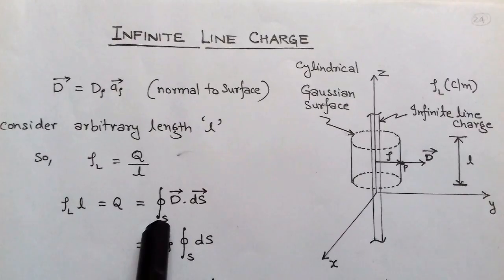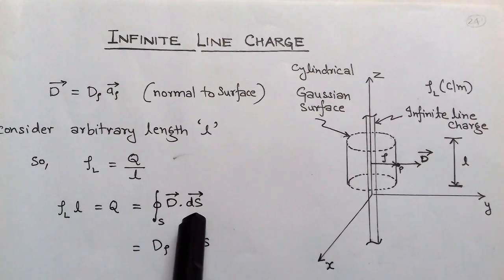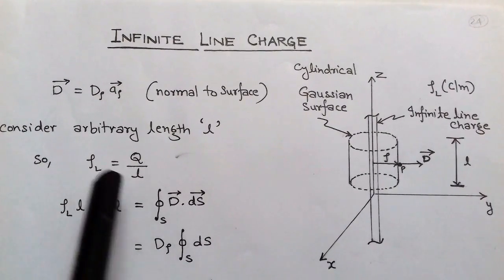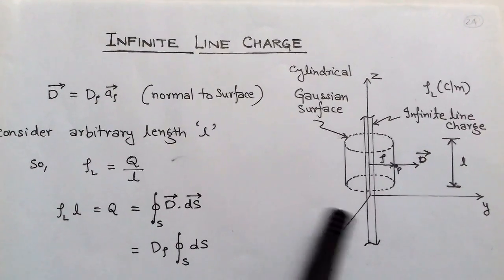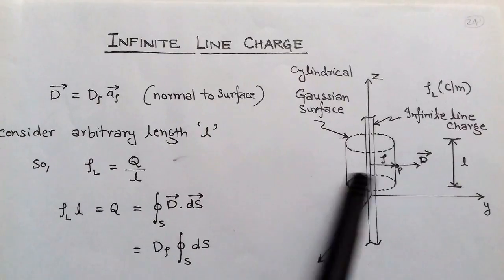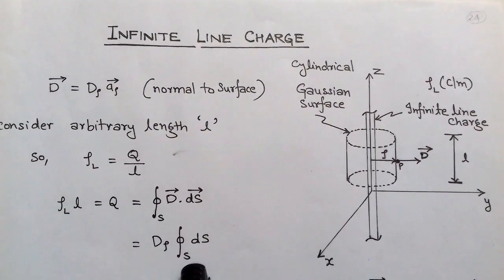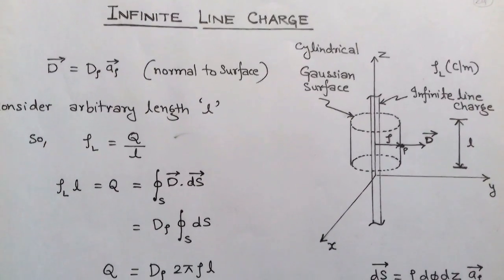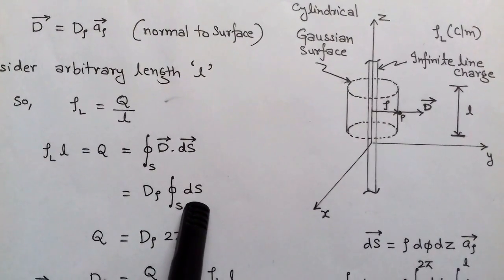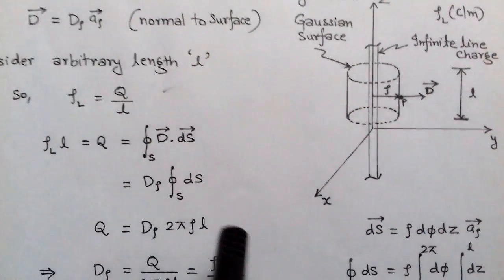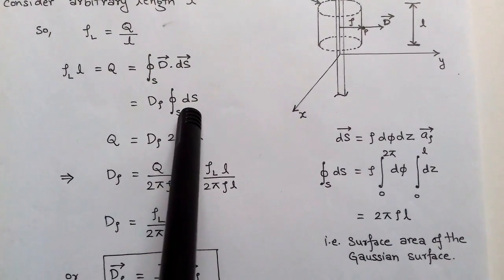Now we apply Gauss's law: Q equals the closed surface integral of D · dS. The dS vector also has a unit normal direction towards â_ρ, so the dot product of these two vectors gives D_ρ · dS. Since both vectors have the same direction, the dot product of the same unit vector is 1, so we get only the magnitude part.